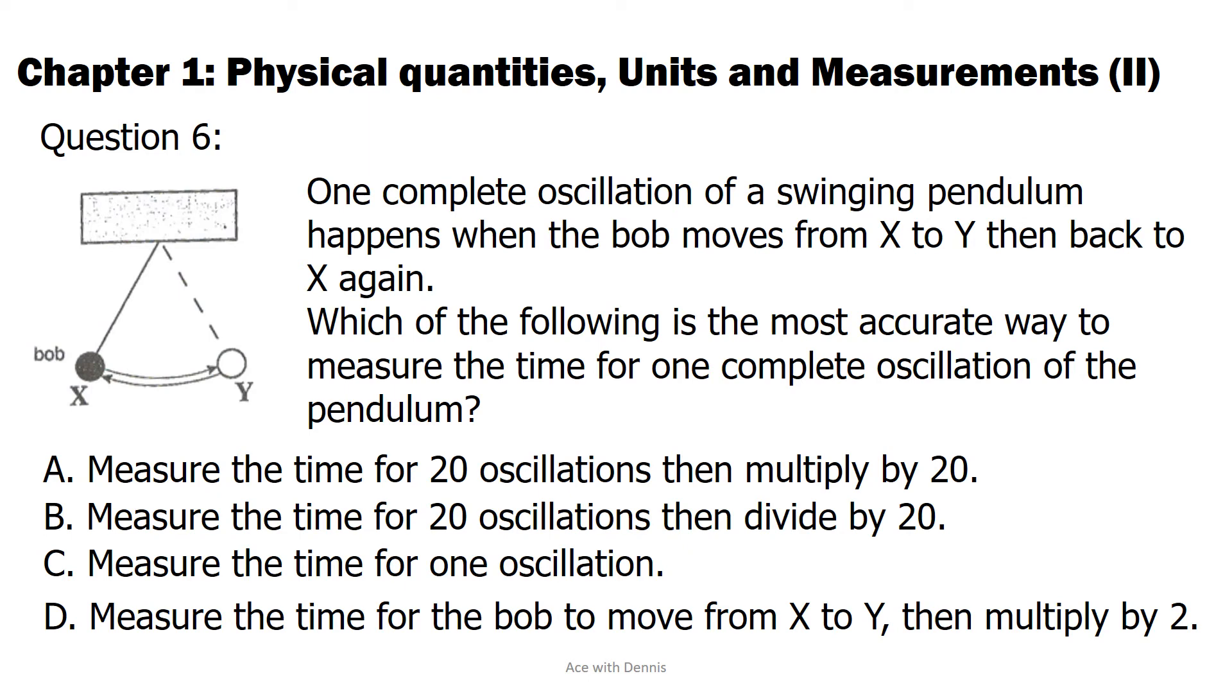The answer is B. We measure the time for 20 oscillations then divide by 20. We need to take the time for 20 oscillations then calculate the average time for one oscillation in order to reduce the error due to human response time in starting and stopping the stopwatch.